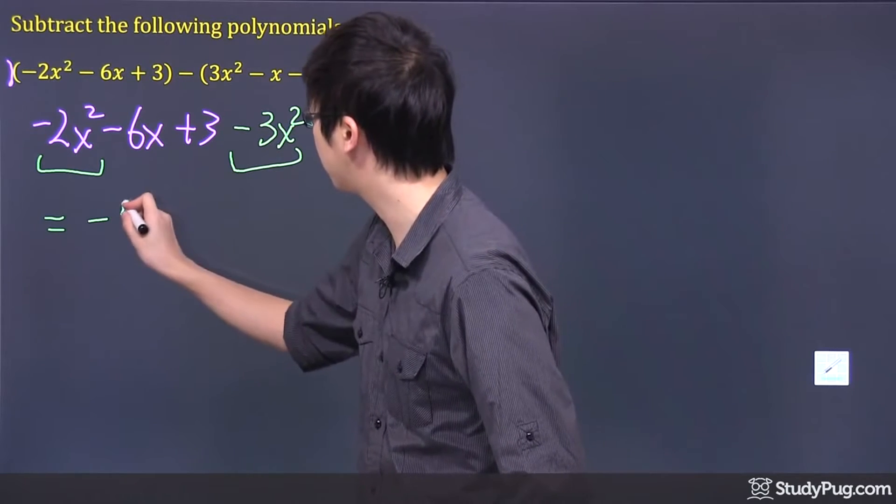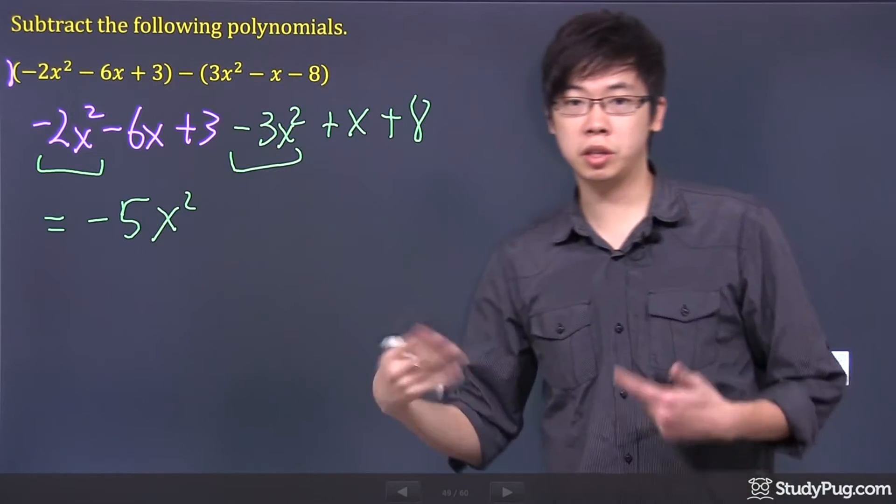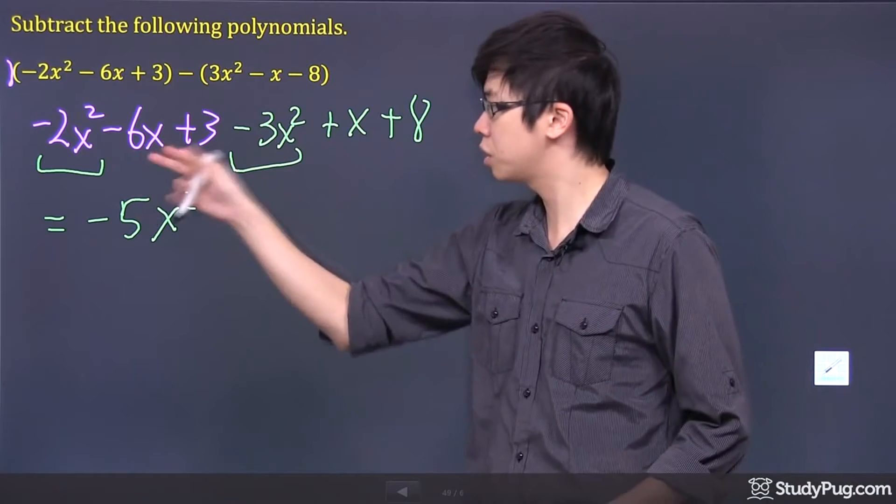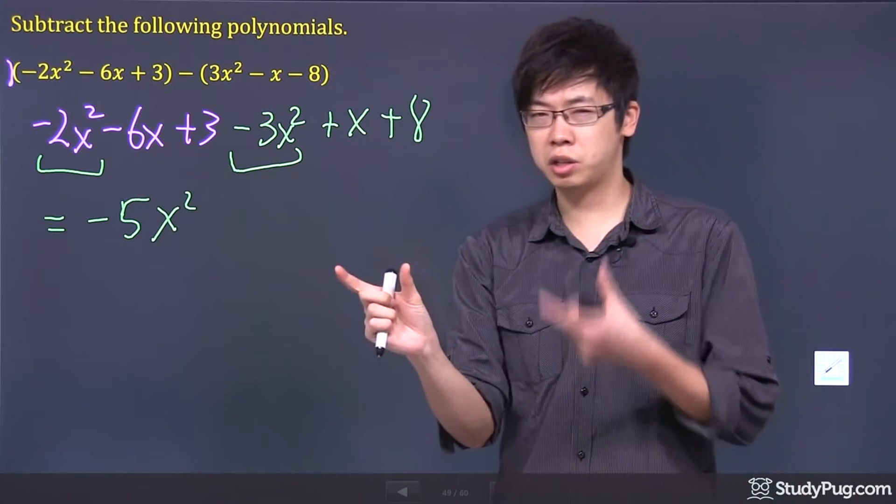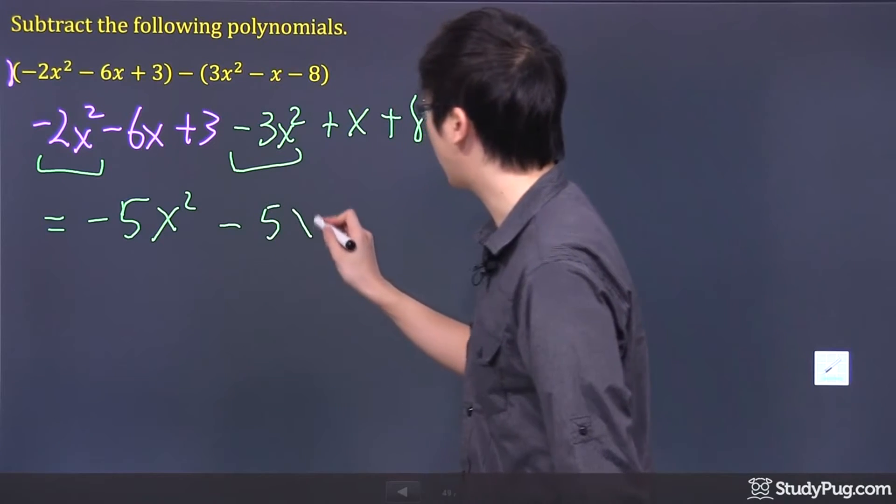Now, what is the next thing you see? I see an x and an x. So that's a negative 6 and that's a plus 1. Negative 6 plus 1, put them together, you get yourself a negative 5x right here.